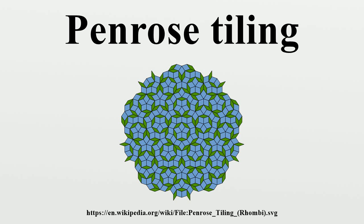A Penrose tiling has many remarkable properties, most notably it is non-periodic, which means that it lacks any translational symmetry. It is self-similar, so the same patterns occur at larger and larger scales. Thus, the tiling can be obtained through inflation, and any finite patch from the tiling occurs infinitely many times. It is a quasi-crystal.